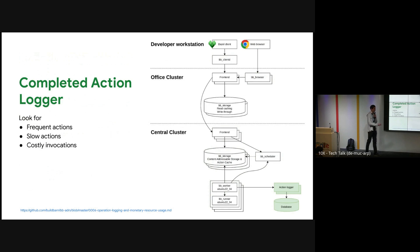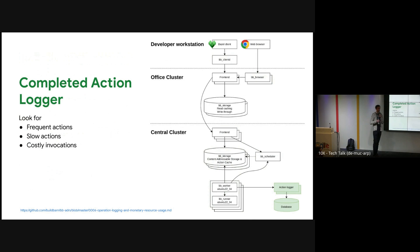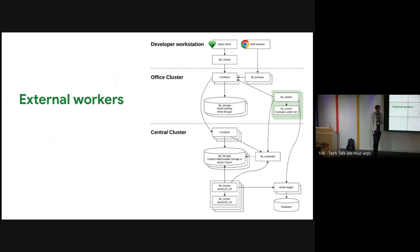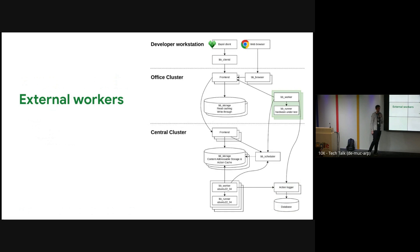You might also want to log what has been executed and log that to your database. Connect the action logger or use the completed action logging API to collect that data and put it in a database, so you can search for very slow builds, reoccurring builds, and what the most costly computations are. In the office, you might also have your own hardware, so you need to add workers there as well — those can talk to the office cluster frontend to get data delivery to local workers more quickly.